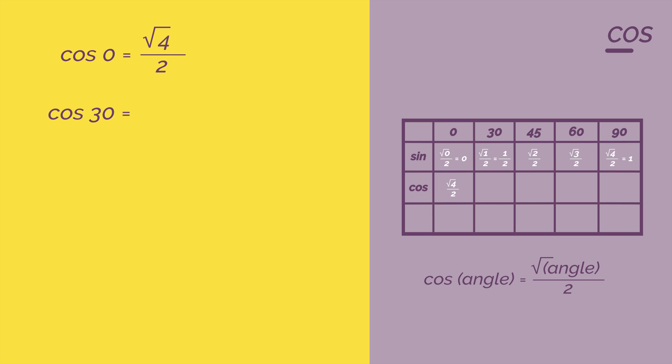Cos 30 is root three divided by two. 45 is root two divided by two. 60 is root one divided by two. And 90, root zero divided by two. And again, we can cancel these down to one, a half and zero.